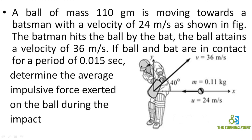The mass of the ball is given as 110 grams. The initial velocity of the ball is 24 meters per second. Observing the figure, this is the initial velocity along the x-direction, because the ball is moving along the x-axis — there is no initial velocity along the y-direction. After the batsman hits the ball, it attains a velocity of 36 meters per second at an inclination with the horizontal. This is a problem based on the impulse and momentum principle.